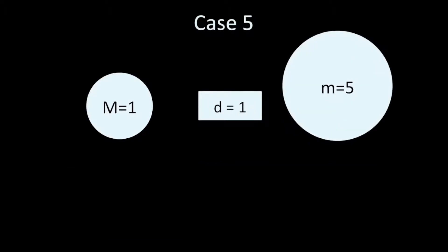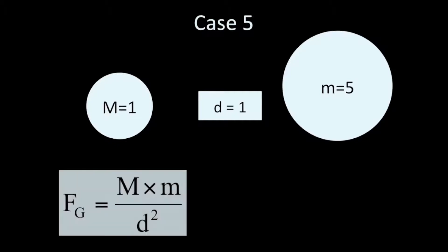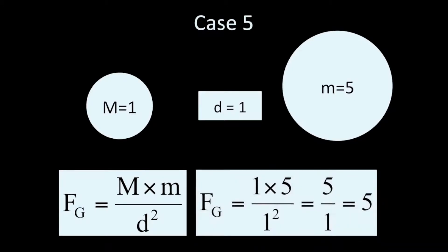Here's another case. Instead of increasing the mass of the object on the left, I increase the mass of the object on the right. So the first mass is one and the second mass is five. Putting the numbers in: one times five divided by one squared, which is five over one, and that's five. It doesn't matter whether the large mass is on the left or on the right — the force comes out to be the same either way.